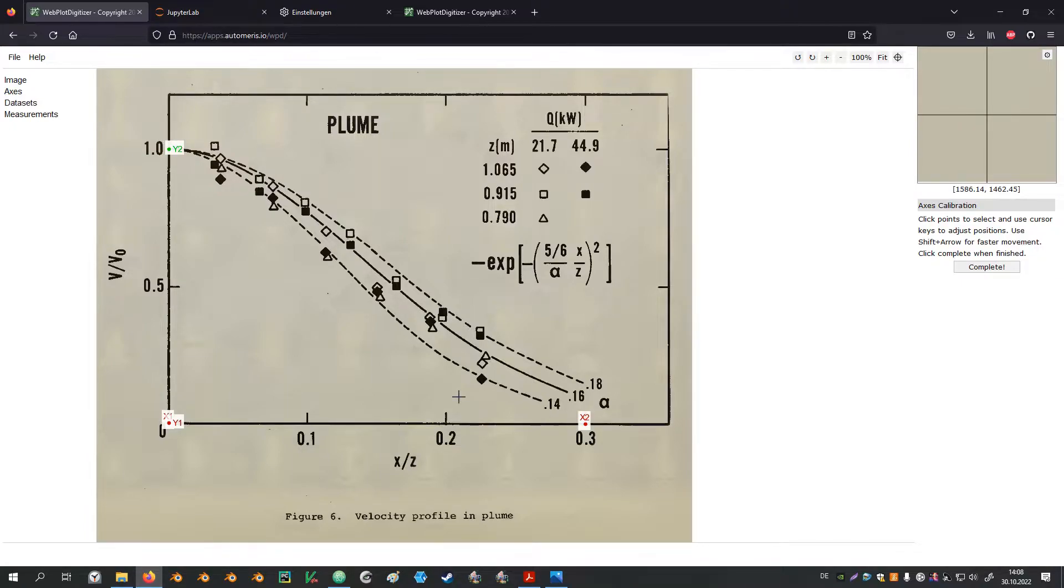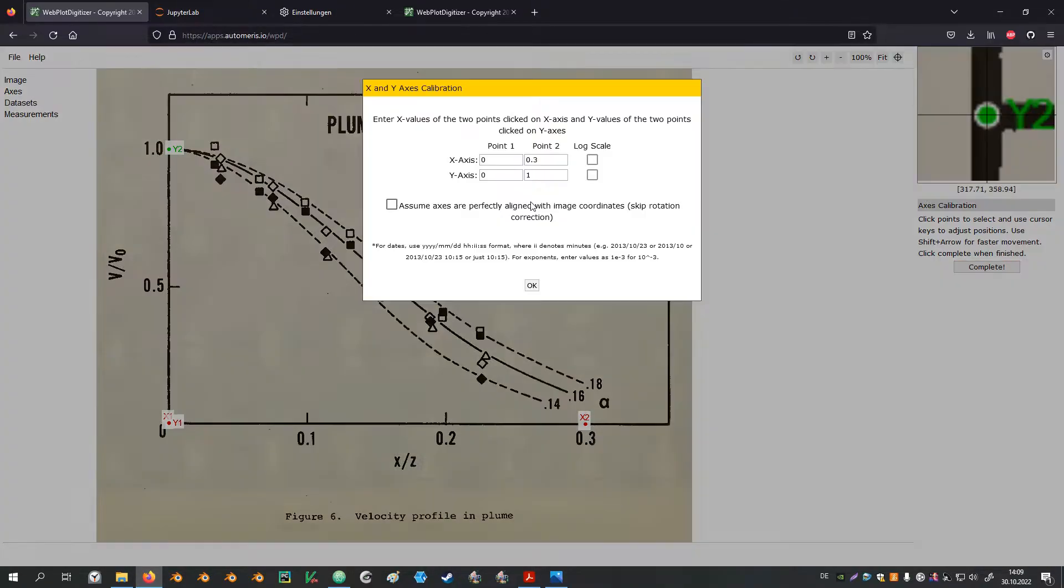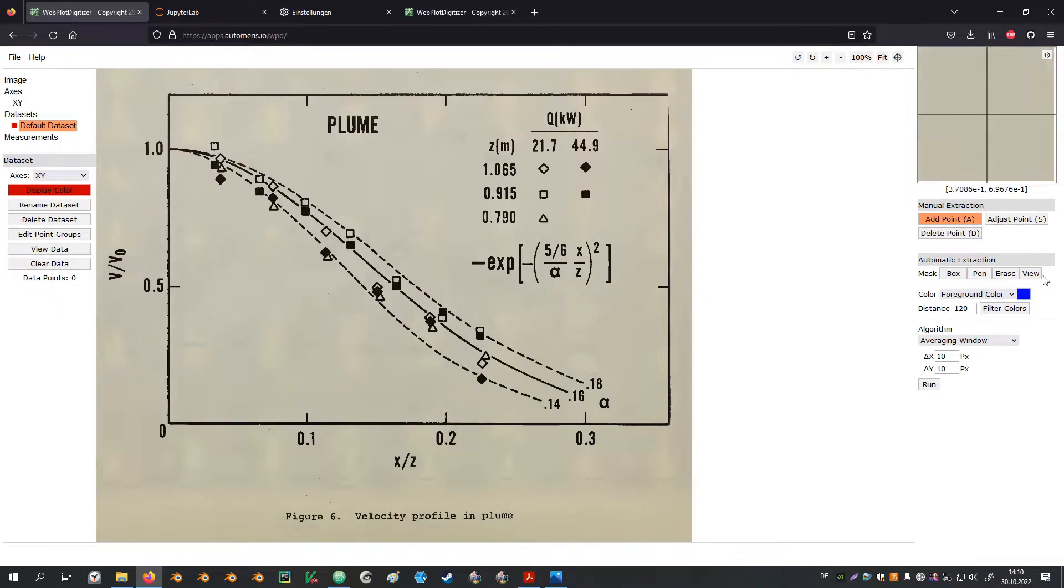When you are satisfied with the location of the points click on the right hand side on the complete button. In the next menu the individual axes are defined by entering the locations of the four points. Afterwards we hit OK. On the right hand side are now two categories for the data extraction.